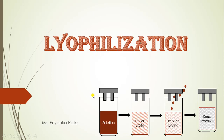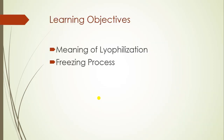As you can see in the diagram, the lyophilization process consists of three different steps: solution preparation, freezing of the solution, and primary and secondary drying, which makes the final dry product.